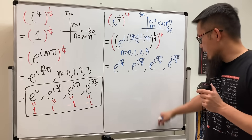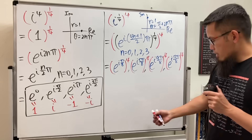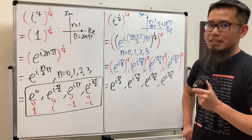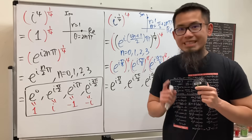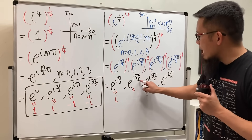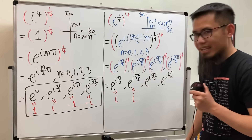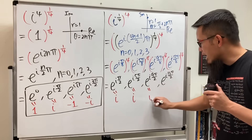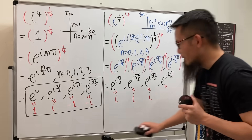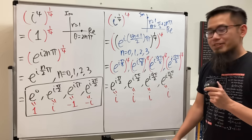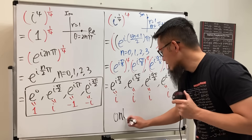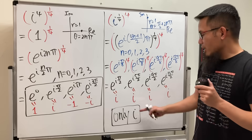We are going to take each one and raise to the power of 4, just multiplying the exponents. When we do that, pi over 2, 5 pi over 2, 9 pi over 2, and 13 pi over 2 all correspond to the same angle — they all equal I. So the answer is just only I. We don't have one answer; we have one unique answer: I.